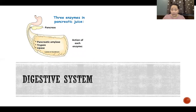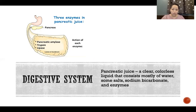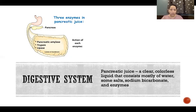In the digestive system there are many exocrine glands — all the digestive enzymes and acids are secretions of exocrine glands. One example is pancreatic juice: a clear, colorless liquid consisting mostly of water, salts, sodium bicarbonate (baking soda), and enzymes. The pancreas's exocrine function is to produce this juice and secrete it into the small intestine to help neutralize acids from the stomach and assist in breaking down nutrients from food.